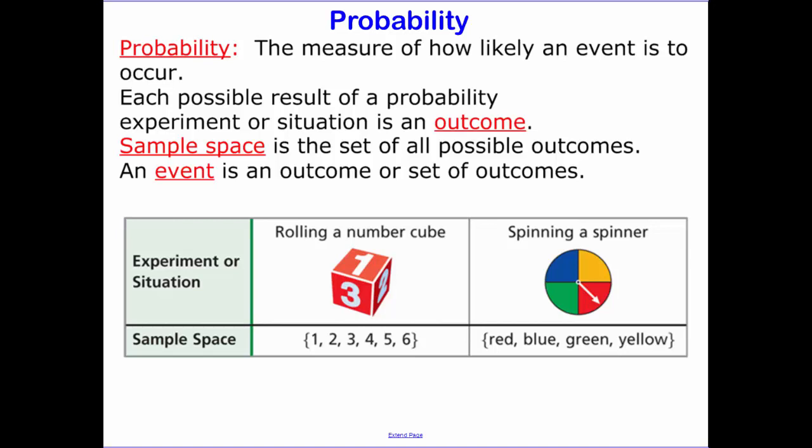An event is an outcome or set of outcomes. So rolling a number cube or rolling a dice, there's six possible outcomes, the numbers one through six. Spinning a spinner, in this case there's four possible outcomes.